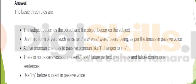What are the basic rules for active and passive voice? There are three basic rules. First, the subject becomes the object and the object becomes the subject. Second, use the third form of the verb along with auxiliaries such as is, am, are, was, were, been, being. Third, active pronouns change into passive pronouns.